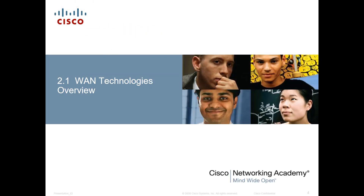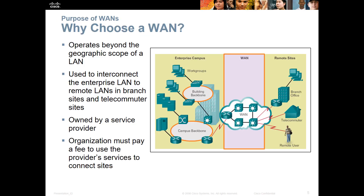First: WAN technology overview. Our WAN is what sits between our edge — whether it be our campus edge, our enterprise edge, our edge of network — the internet, and our remote locations. Remote locations could be a remote branch, remote users, telecommuters. The WAN is typically provided by a service provider. Our largest WAN is going to be an ISP — the internet — and we pay a fee to use that WAN.